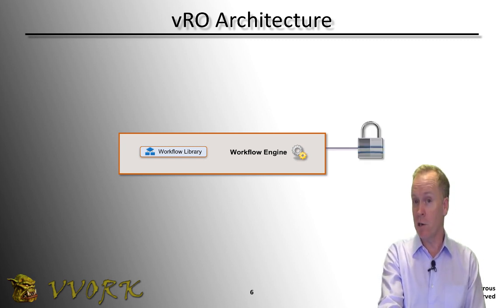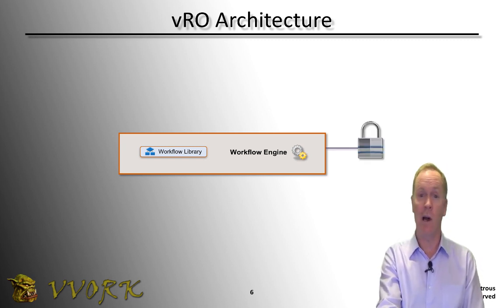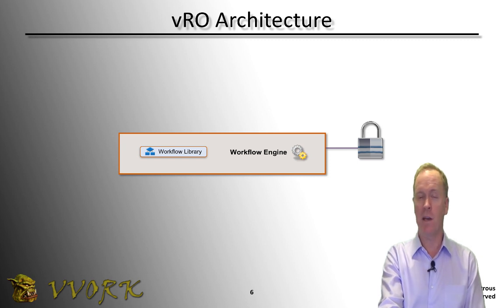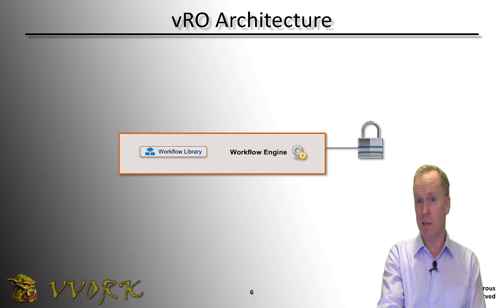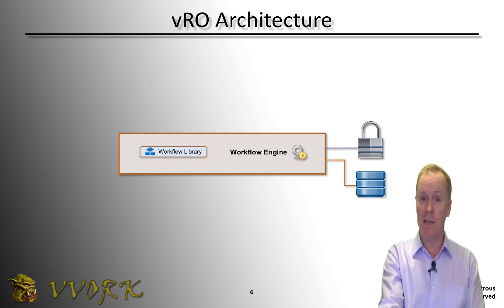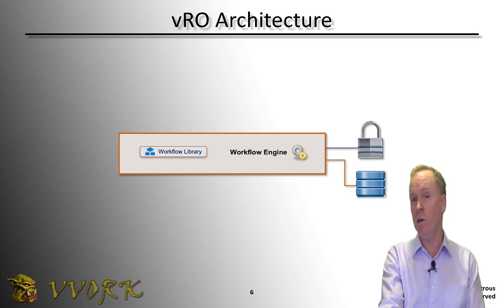Orchestrator, just talking architecture, needs to authenticate users — we have a choice of authentication mechanisms. Typically that will be SSO, single sign-on from your vCenter server, or it could be Active Directory or other things. Additionally, Orchestrator needs to have a database — that could be a SQL Server database, an Oracle database, or you can use the embedded database built into Orchestrator itself.